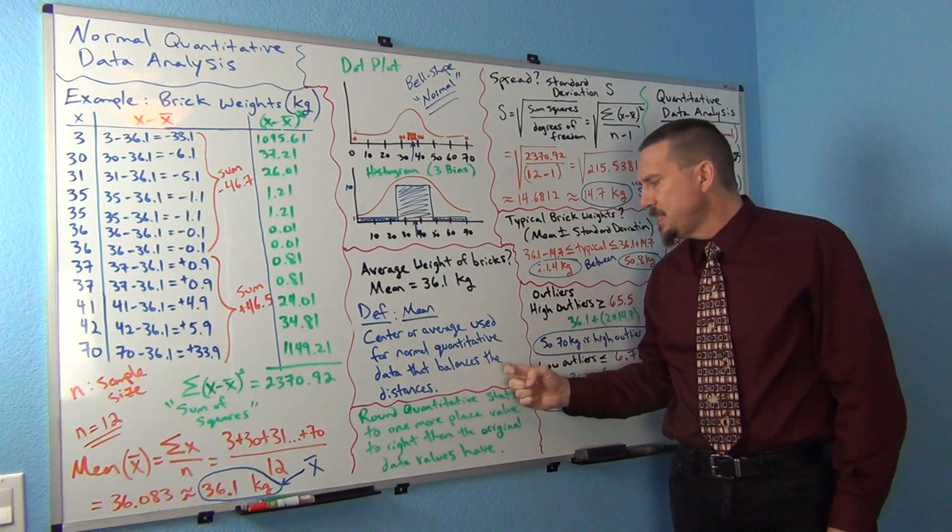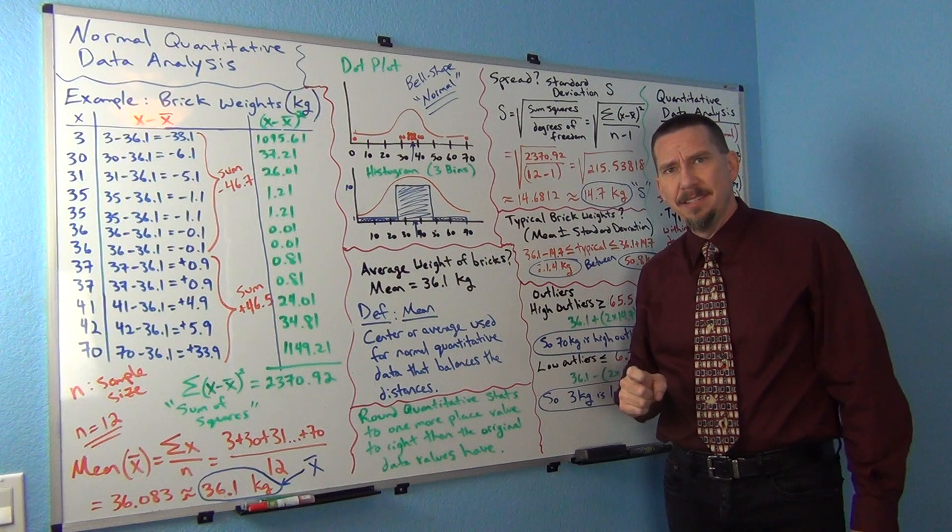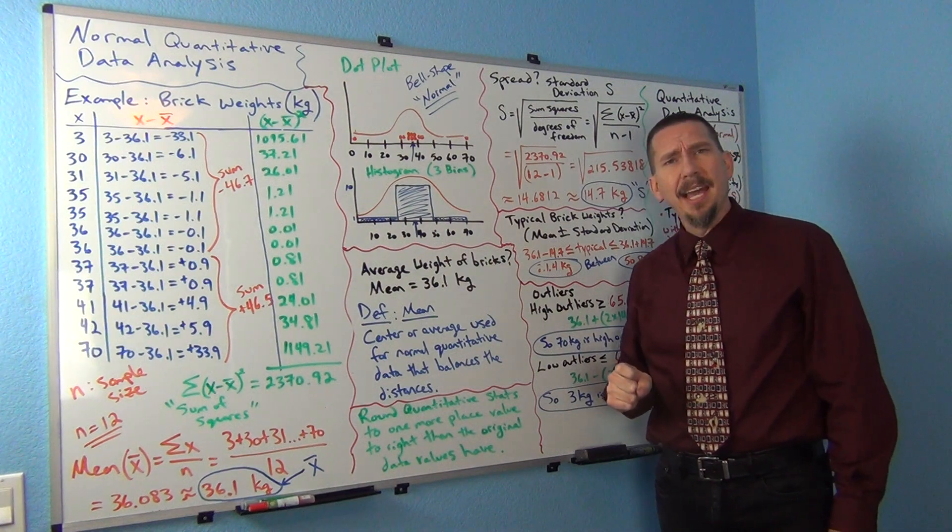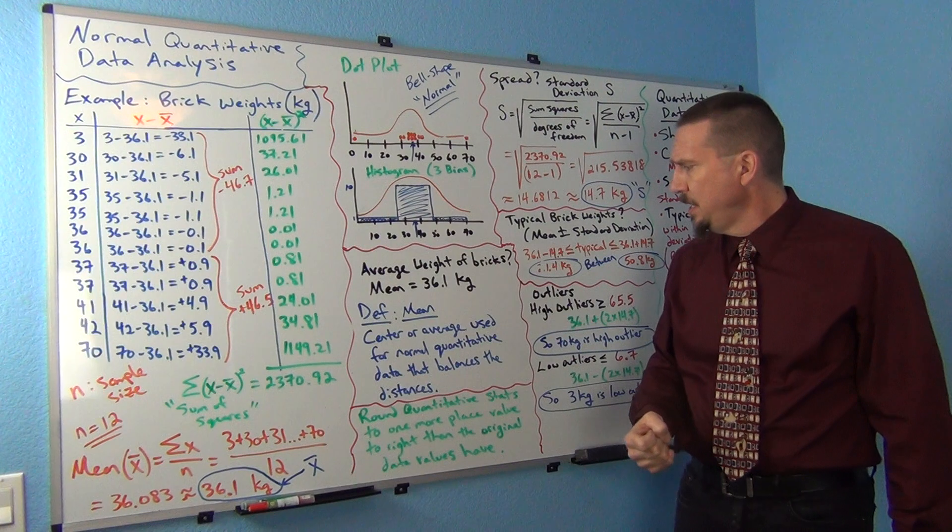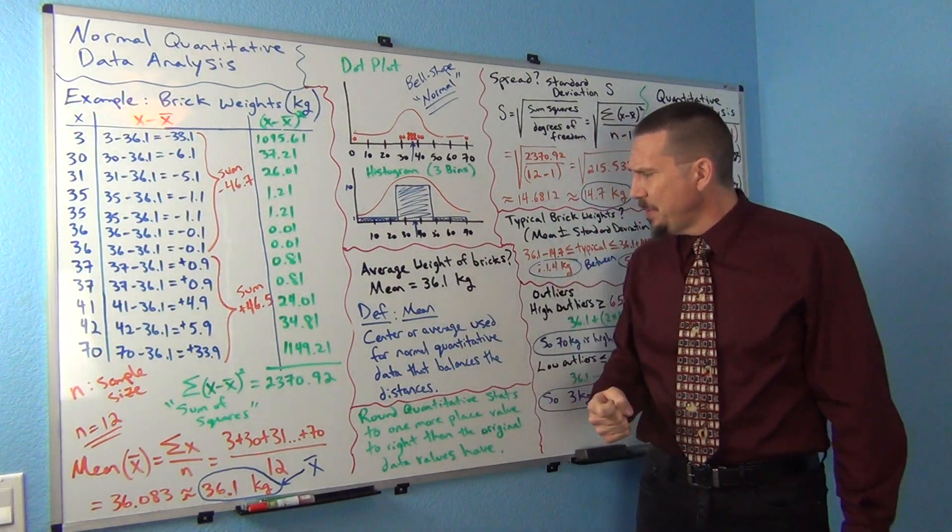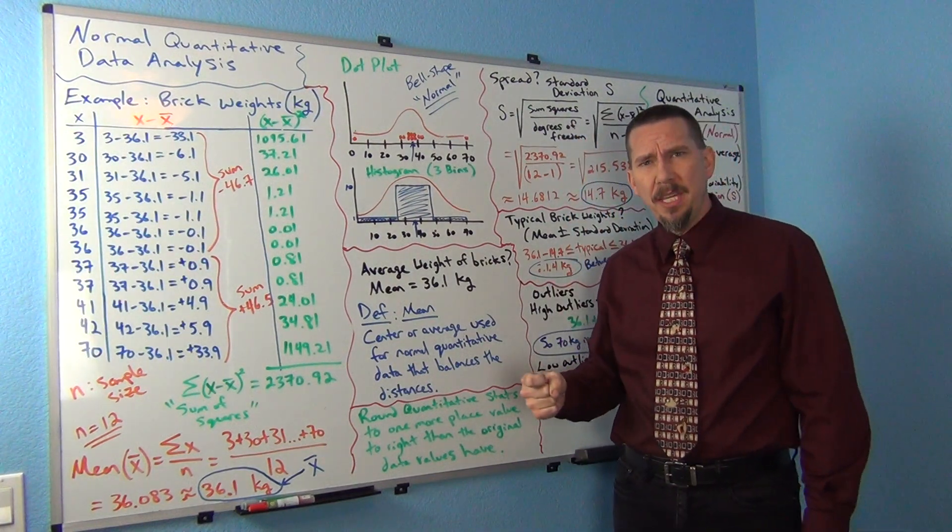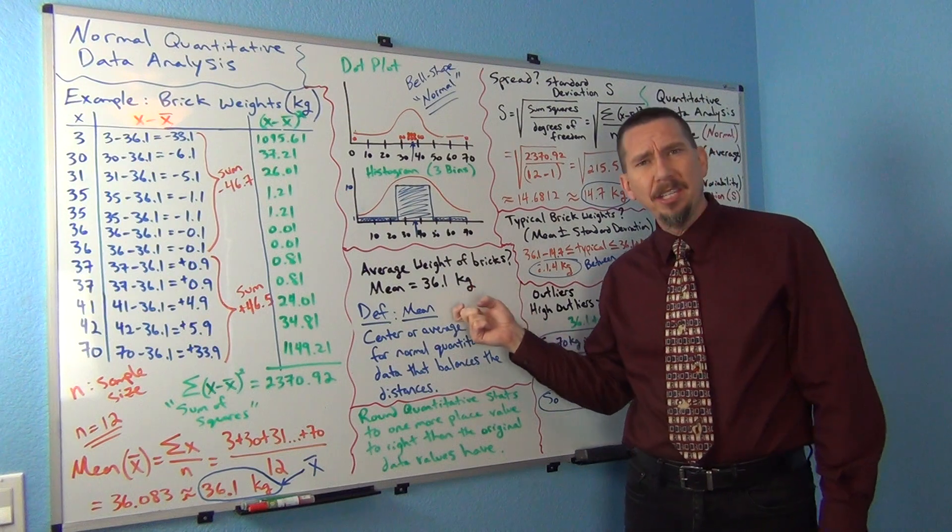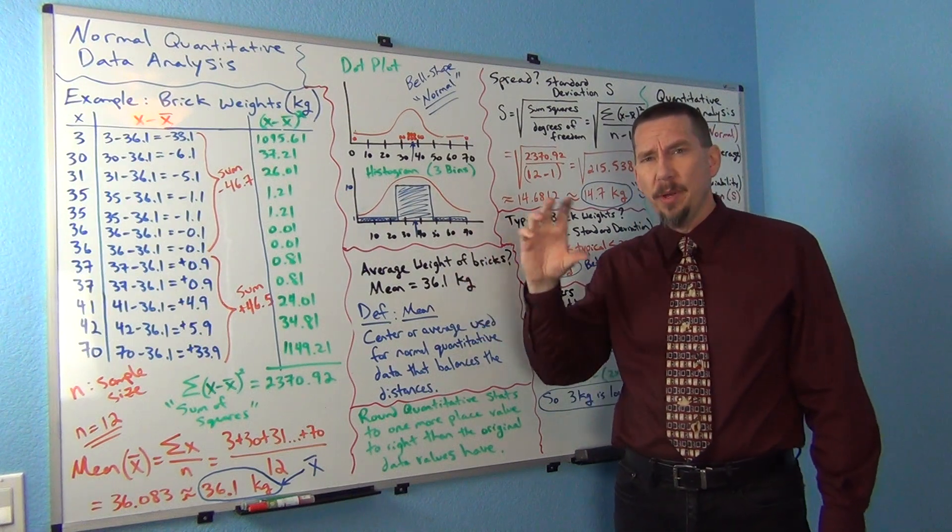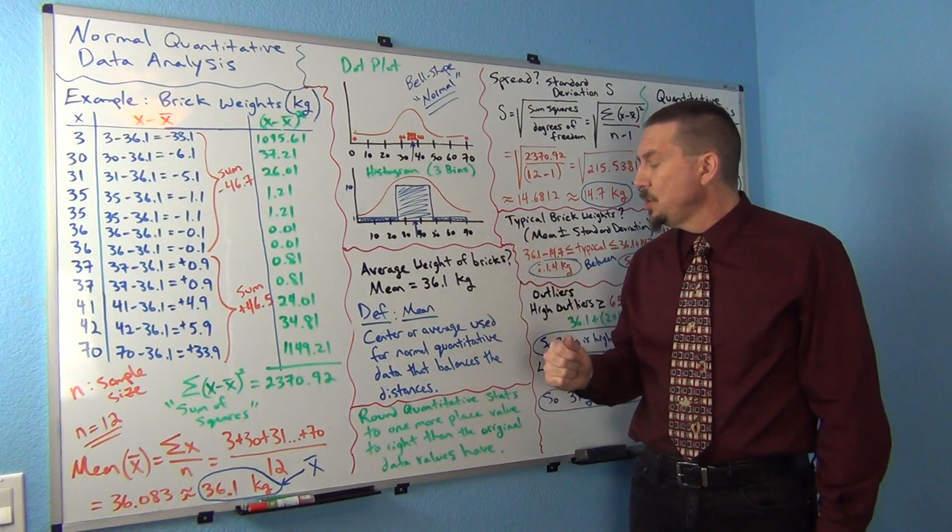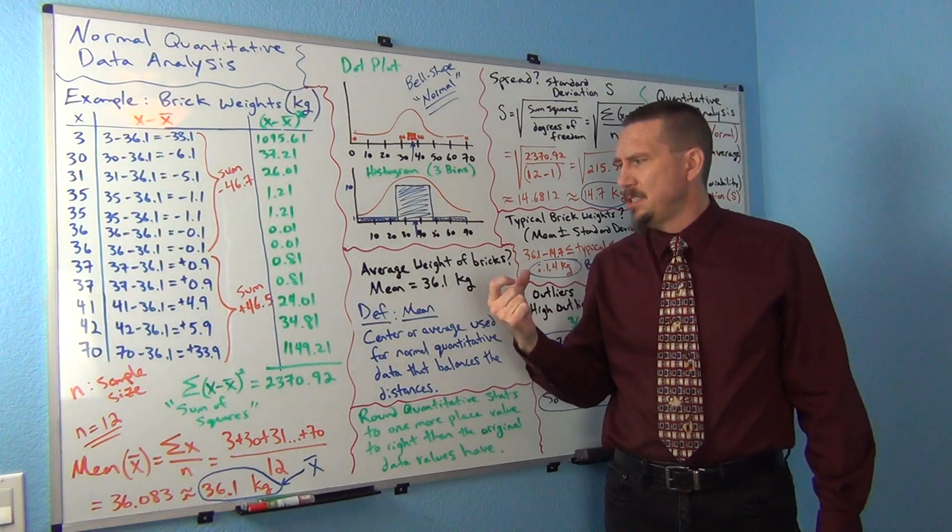A mean average is usually the center or average used for normal quantitative data, and it balances the distances. Sometimes we call it a balancing point for distances. Now what does that actually mean? A lot of people know how to calculate a mean, but a lot of people don't really know what the mean does. So the mean really balances the distances.